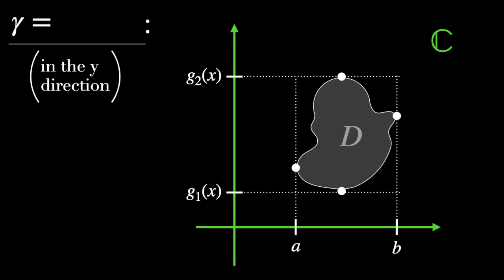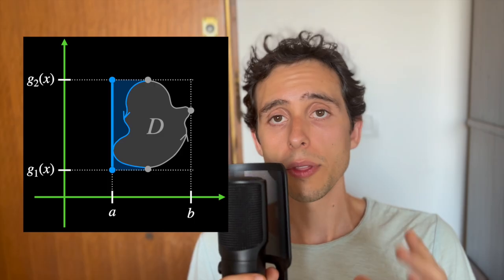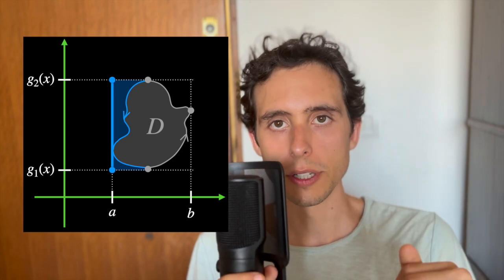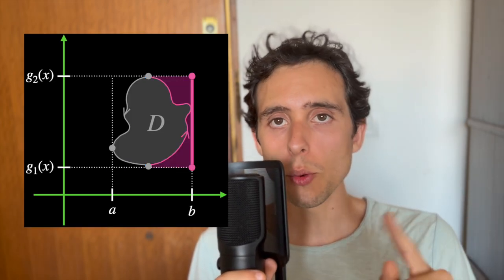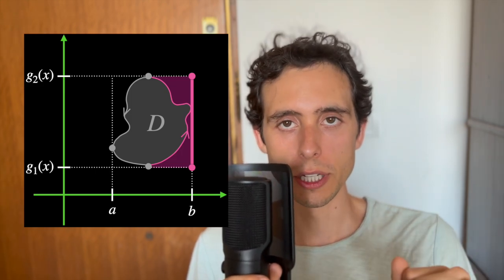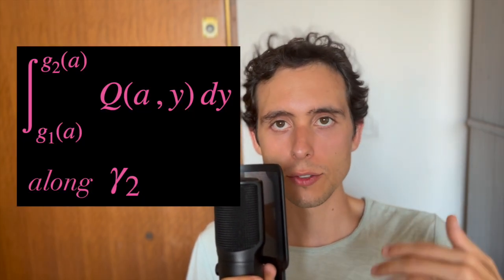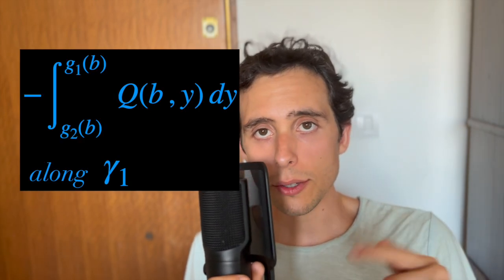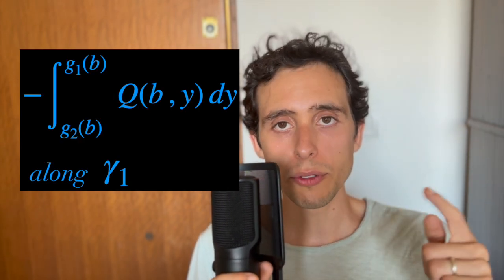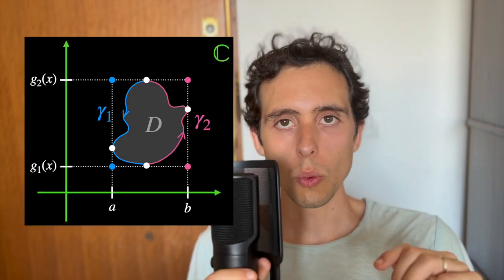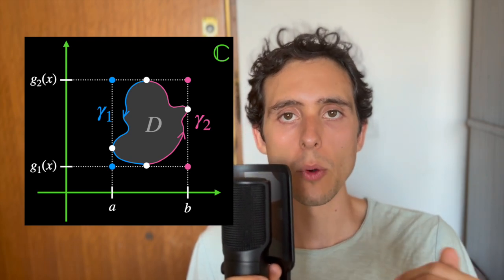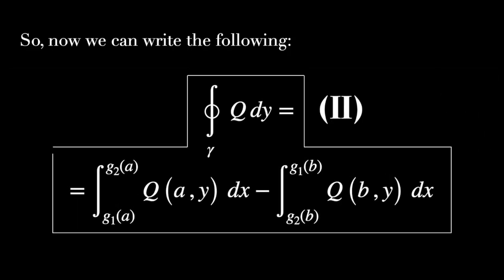Let's do something very similar now but breaking gamma in the y direction. We break gamma into gamma 1 and gamma 2 vertically this time. The line segment connecting A, G1(A) and A, G2(A) is the left boundary for the closure of D, and the line segment connecting B, G2(B) and B, G1(B) is the right boundary. This way we can parameterize gamma to get the integral from G1(A) to G2(A) of Q(A, y) along gamma 2, and minus the integral from G2(B) to G1(B) of Q(B, y) along gamma 1. Again, notice the negative sign as a consequence of the reversed direction of gamma 1. So now we can write our second equation.